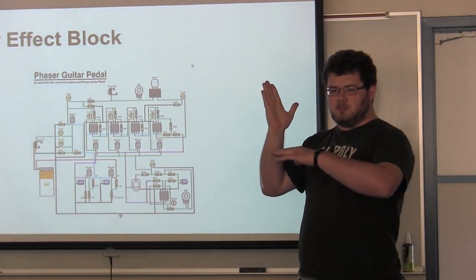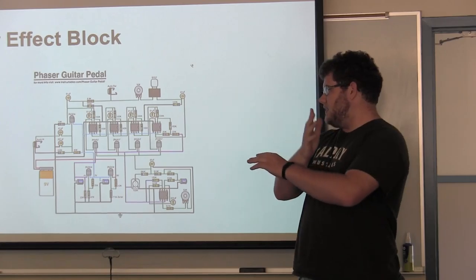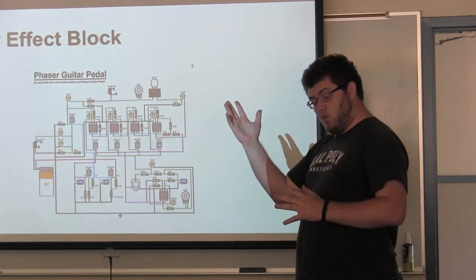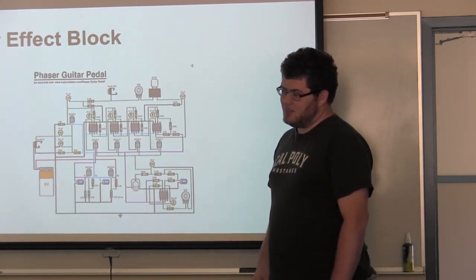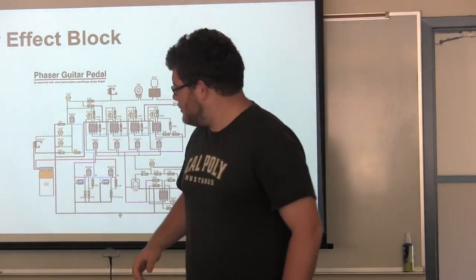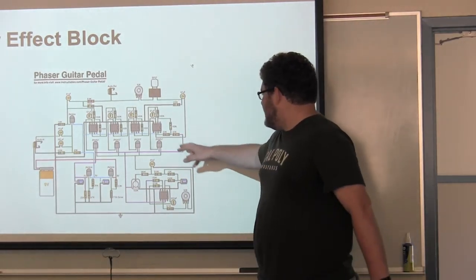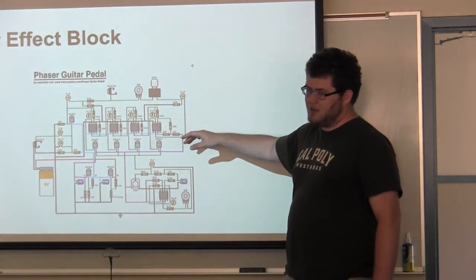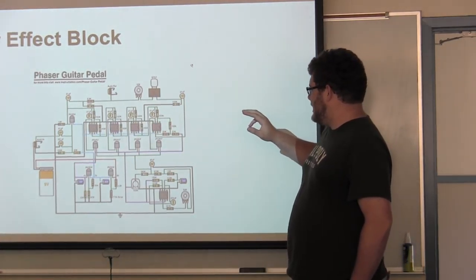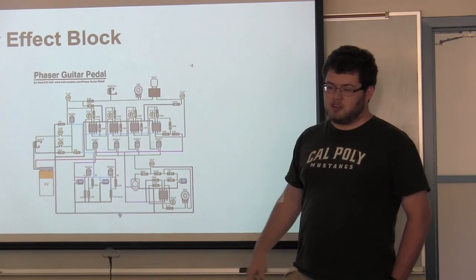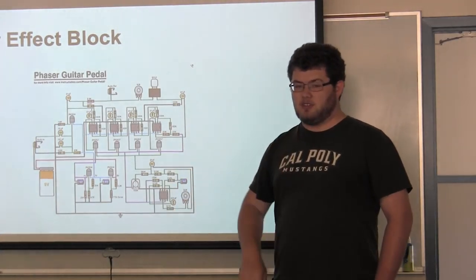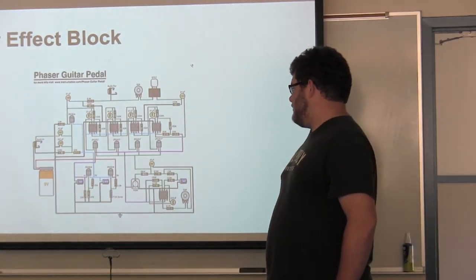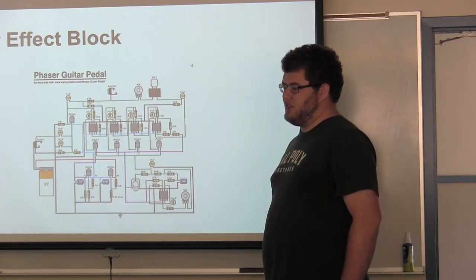So really the only thing that we actually needed to make was this cascade of op amps that form an all-pass filter and combines a clean signal with a phase-shifted signal, so it's in and out of phase with itself. And the problem with that circuit is if you see here there are a bunch of 100K resistors all over the place, and here are a lot of op amps. That actually drew a lot of current.